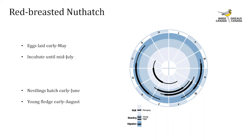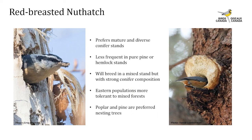Red-breasted nuthatches begin laying eggs in mid-April and continue incubating until mid-July; the young hatch at the beginning of May and fledge as late as early August. They prefer mature and diverse coniferous forests — especially pine, spruce, fir, hemlock, and cedar — and are less frequently observed in pure pine or hemlock stands. They will breed in mixed forest but it still needs a strong conifer composition. The eastern population is more tolerant of mixed forest stands, and their preferred nesting trees are poplar and pine.